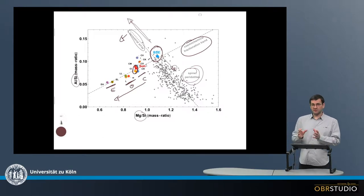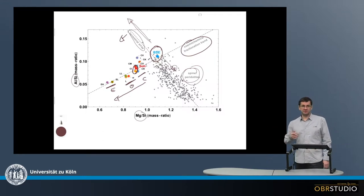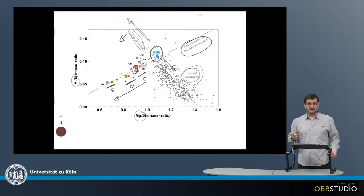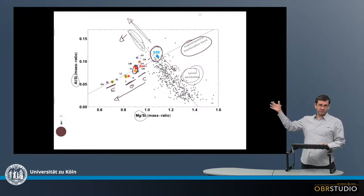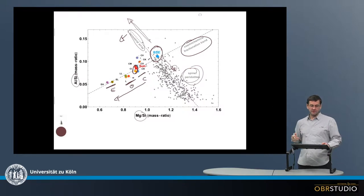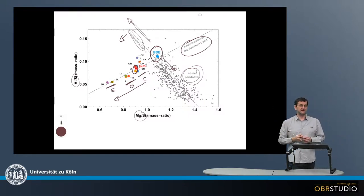Because we would expect a reservoir rich in magnesium, as forsteritic olivine has a magnesium-silicon ratio of 2, so there should be a reservoir with substantial amounts of magnesium, which is exactly what we don't observe here. That would be Earth, basically. But we don't find it, and for Earth, the explanation is more that silicon is in the core.